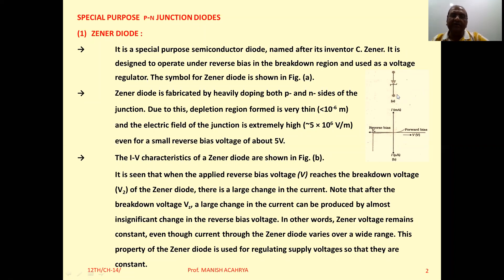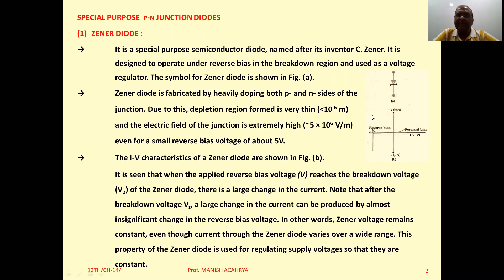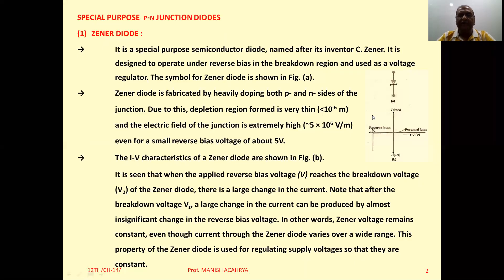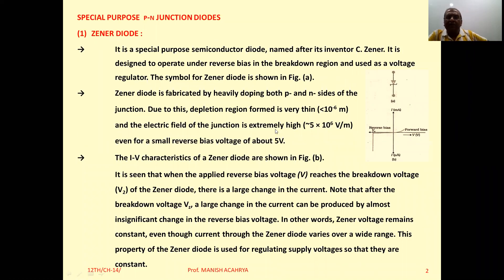Zener Diode is formed with the concentration of impurity atoms increased. It implies that in a simple PN junction diode, the concentration of impurity atoms is increased.